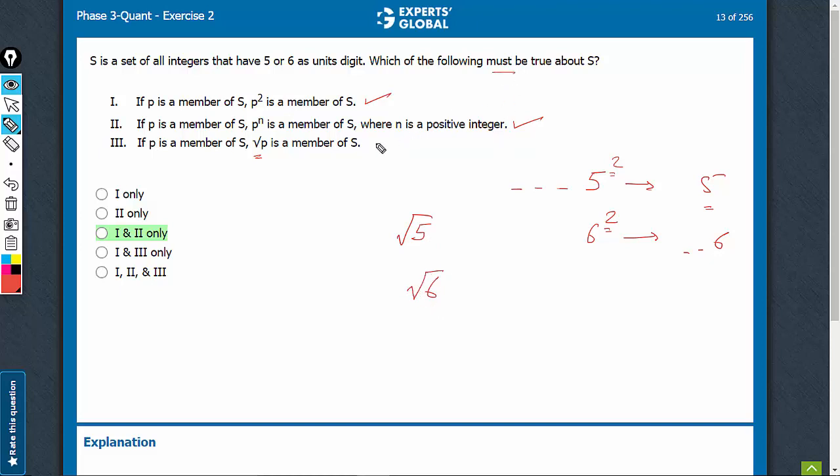So must be cannot be said and therefore, it's only 1 and 2. C is the right answer.